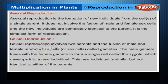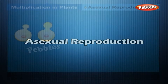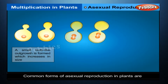Sexual reproduction involves two parents and the fusion of male and female reproductive cells or sex cells called gametes. The male gamete fuses with the female gamete to form a single cell called the zygote, which develops into a new individual. This new individual is similar but not identical to either of the parents.